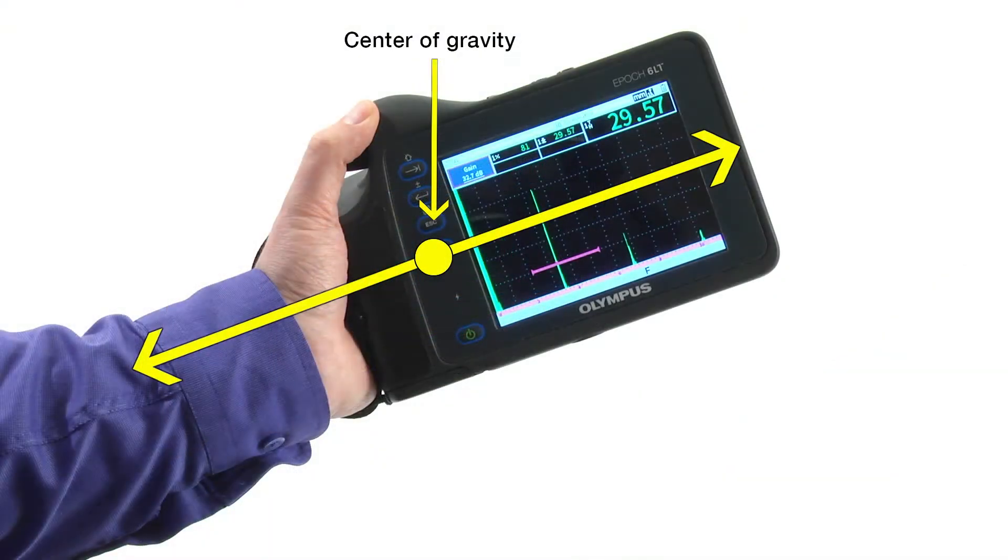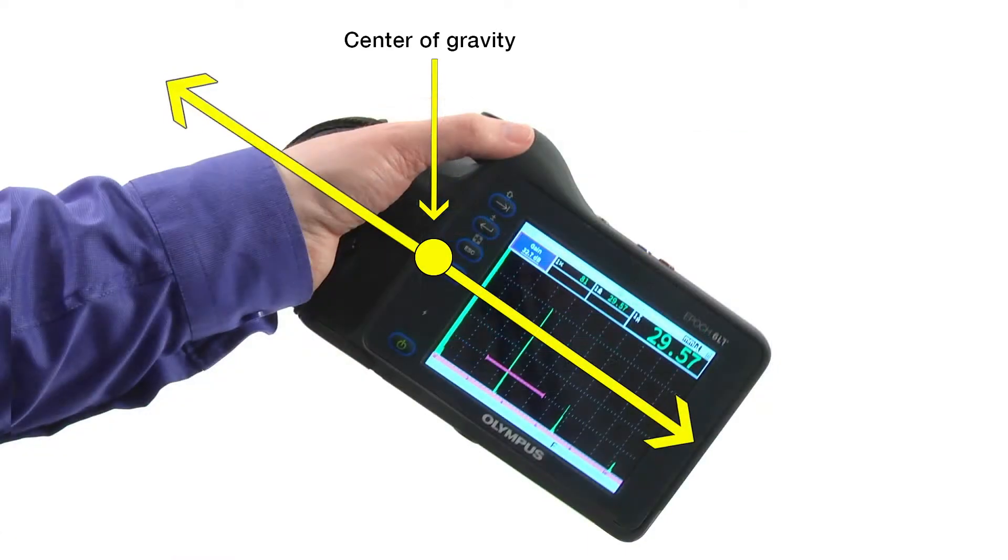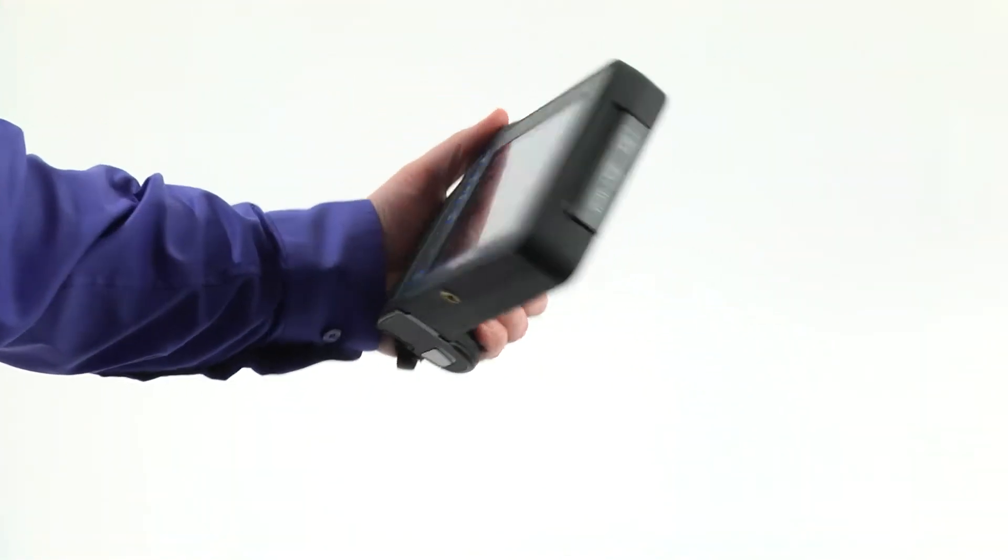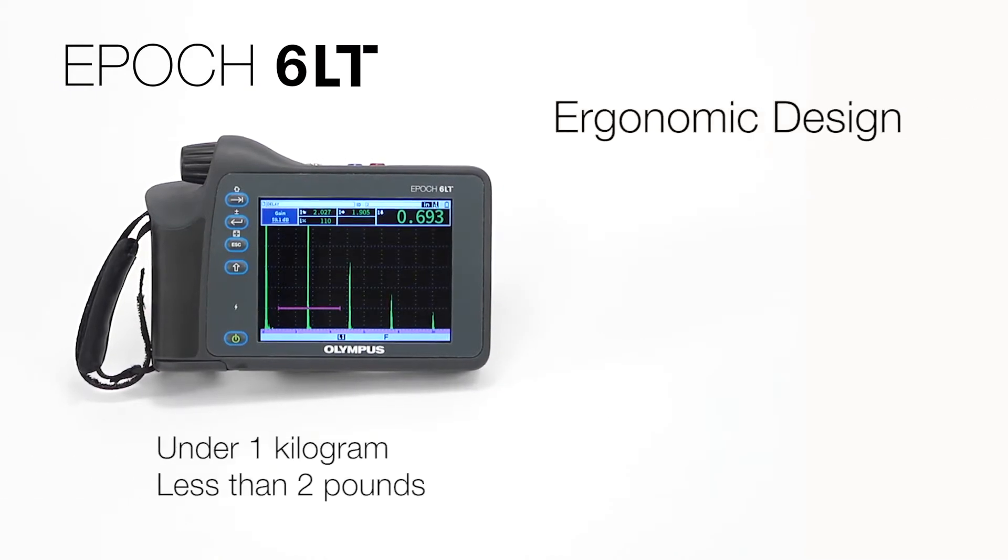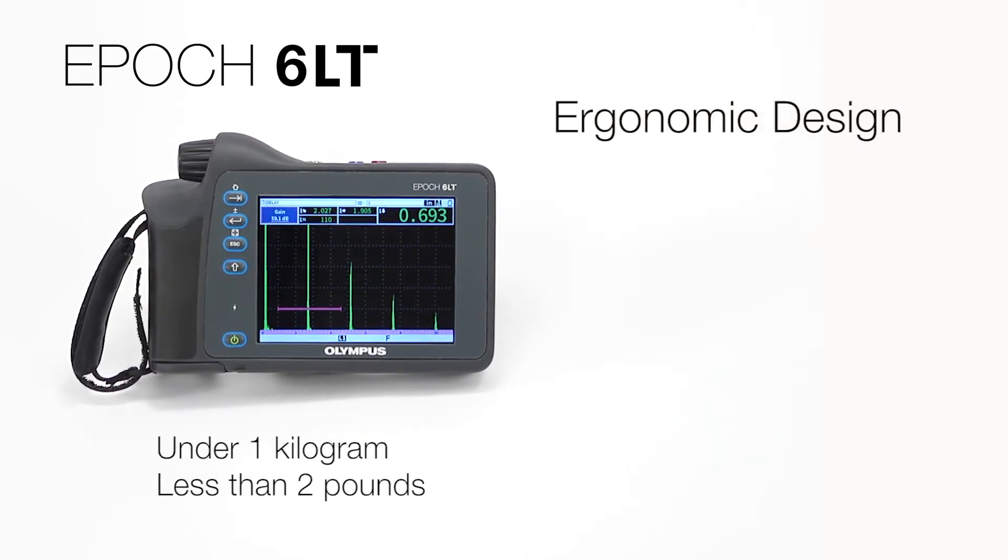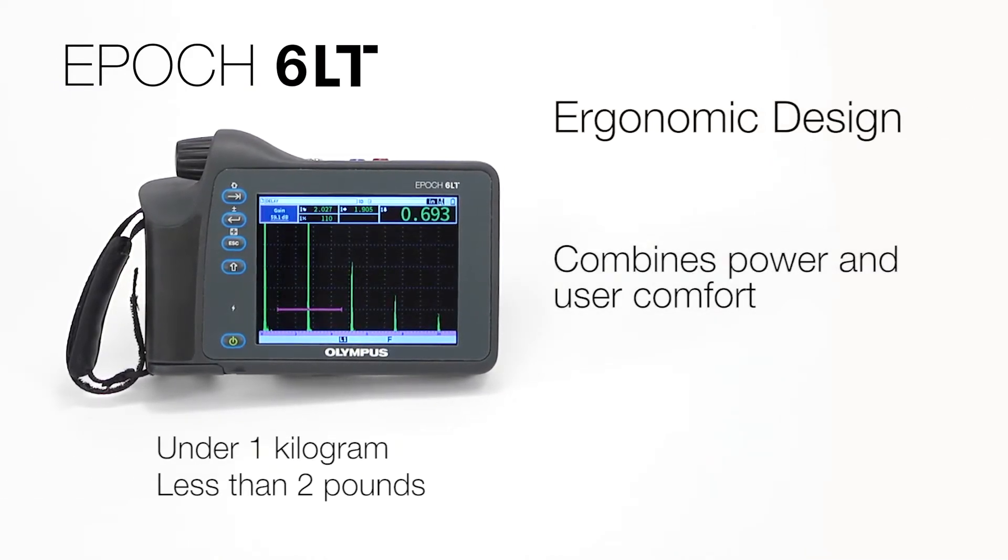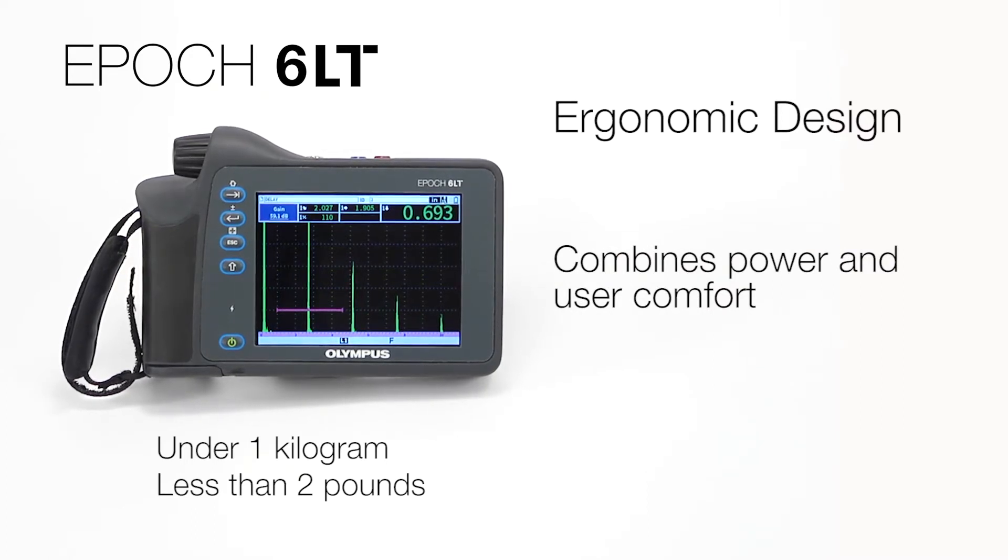The instrument's center of gravity is closer to the hand grip, resulting in less wrist fatigue when using the Flaw Detector for long periods of time. Combined with an overall weight of under one kilogram or less than two pounds, the EPOCH 6LT Flaw Detector's ergonomic design combines power and user comfort.